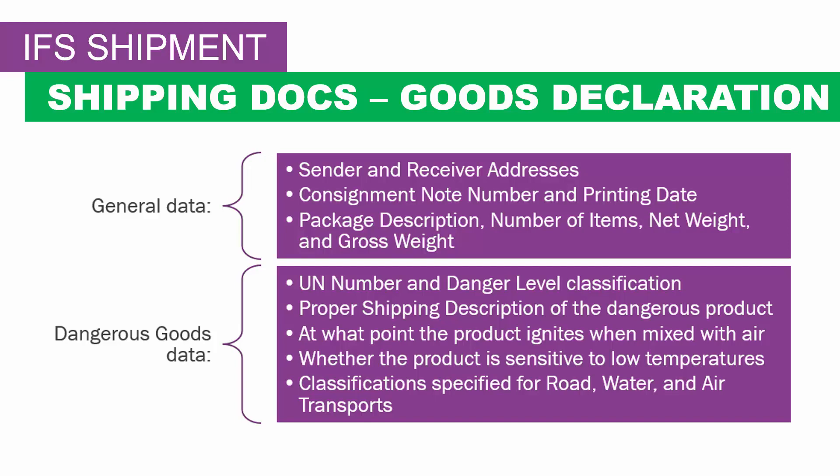The data displayed on the goods declaration is entered on each inventory part. Part-specific data relating to dangerous goods is entered on the part catalog, on the dangerous goods classification tab. This declaration is printed together with either the consignment note or the bill of lading.